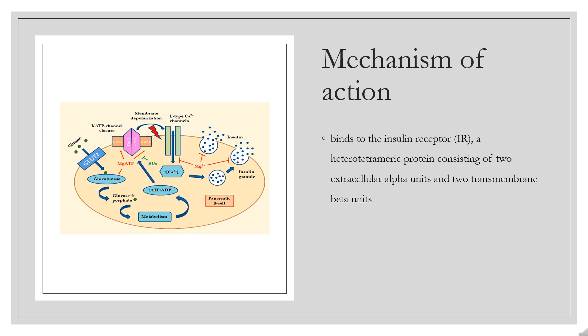The bound receptor autophosphorylates and phosphorylates numerous intracellular substrates such as insulin receptor substrates (IRS) proteins, CBL, APS, SHC, and GAB1. Activation of these proteins leads to the activation of downstream signaling molecules including PI3 kinase and AKT.